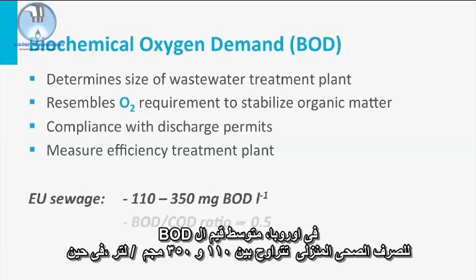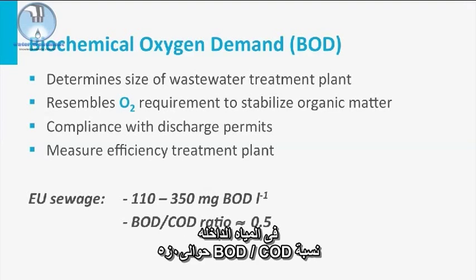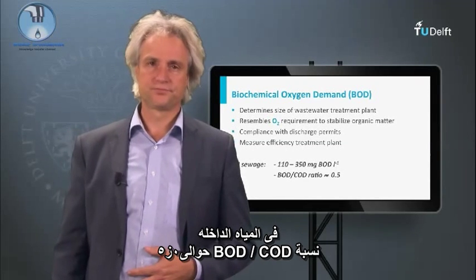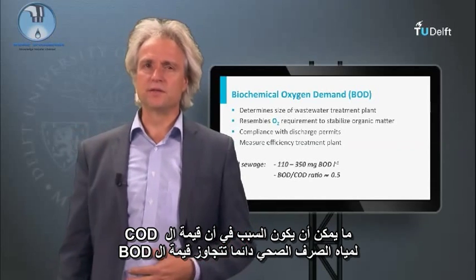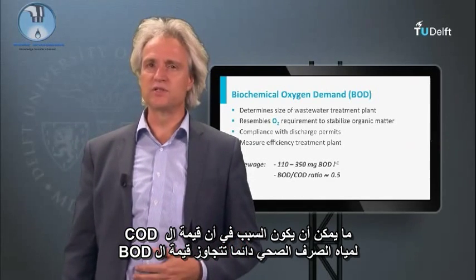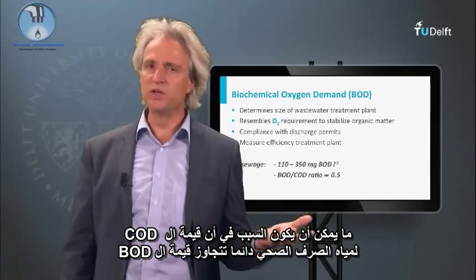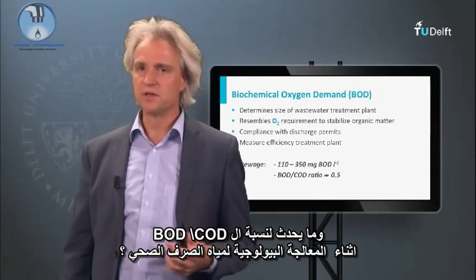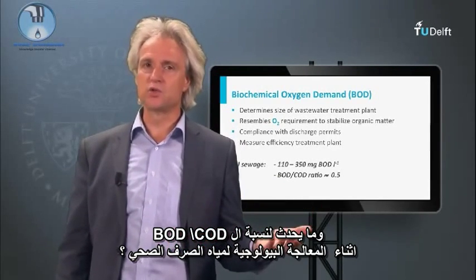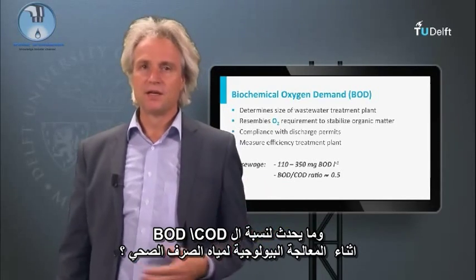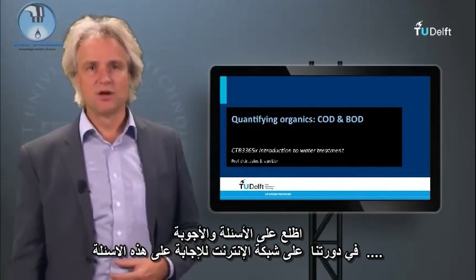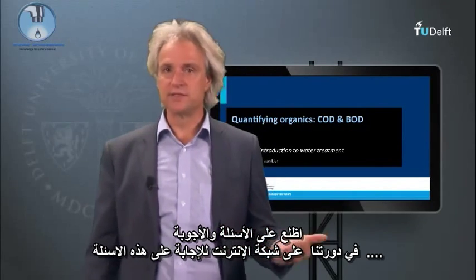In European domestic sewage, the average BOD value is between 110 and 350 mg BOD per liter, whereas the BOD-COD ratio in the influent is about 0.5. What could be the reason why the COD value of sewage always exceeds the BOD value? And what happens with the BOD-COD ratio during biological treatment of the sewage? Check out the questions and answers of our online course to answer these.